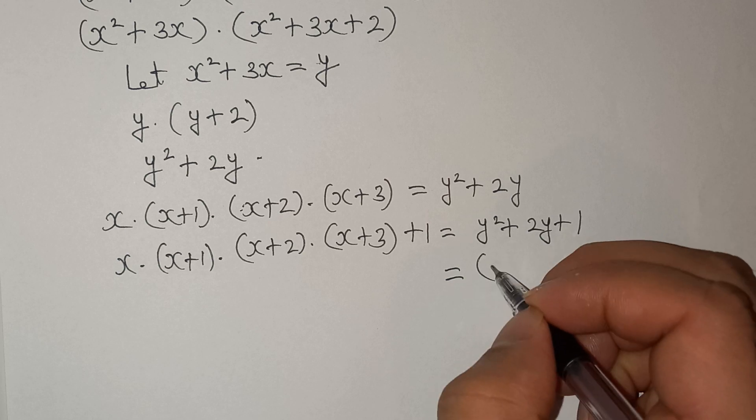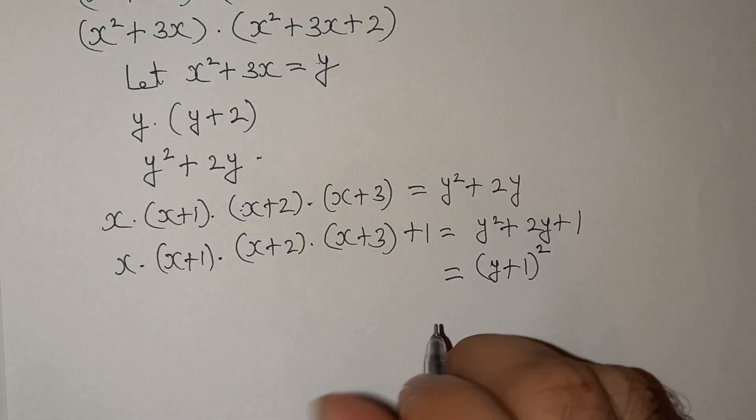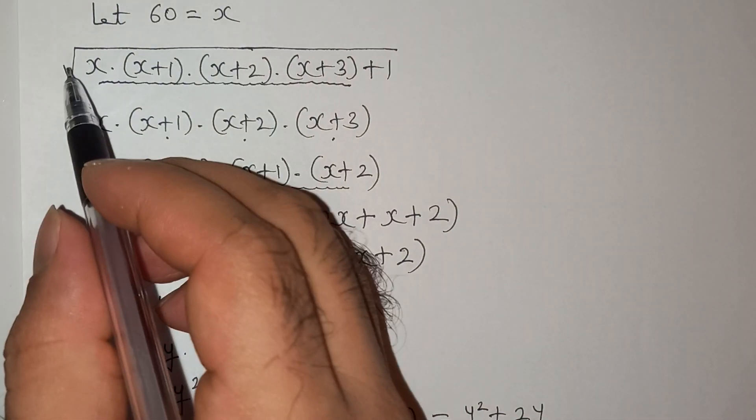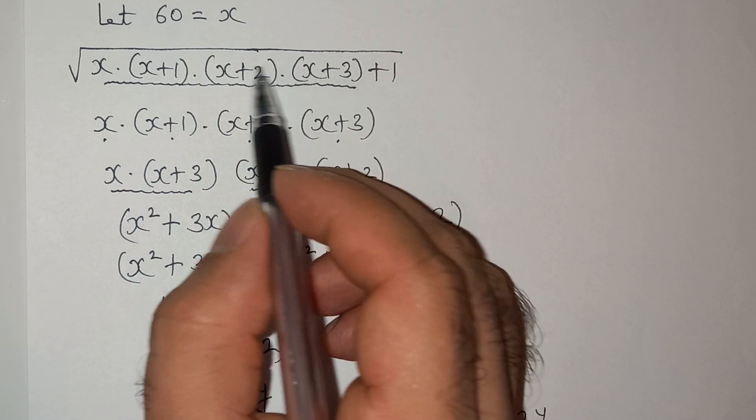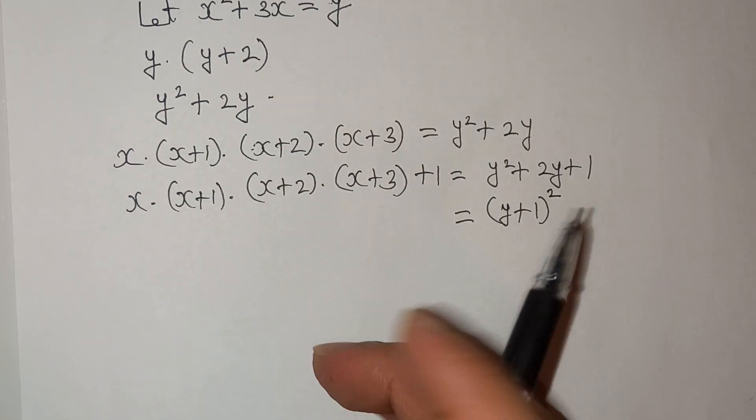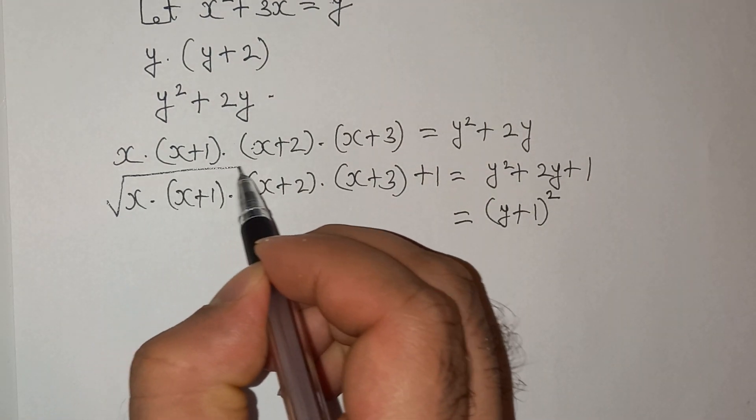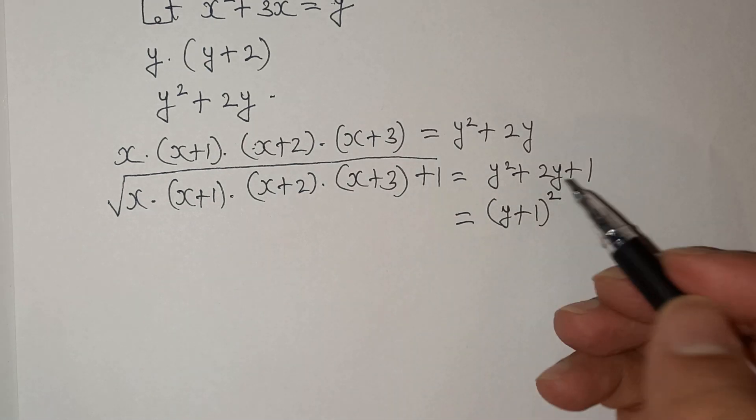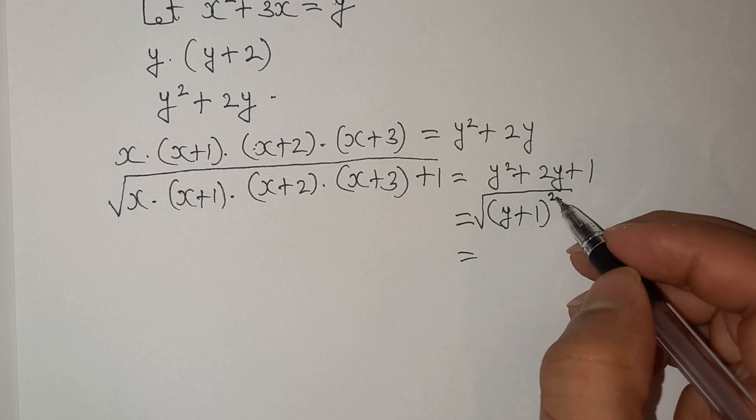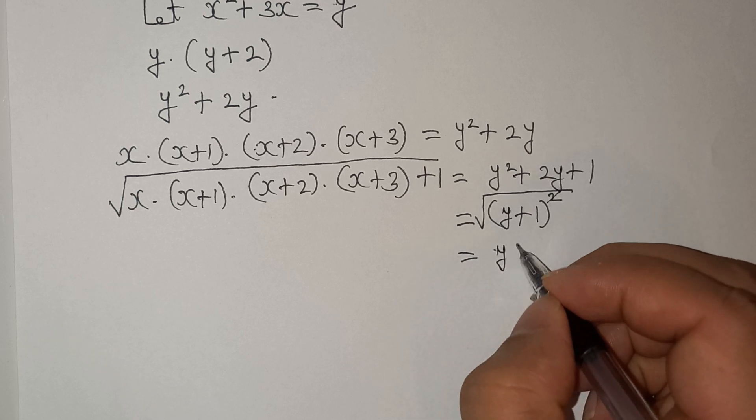So this will be (y+1) whole square. Now we had to find the root of this total expression. So this square will cancel and we will have (y+1).